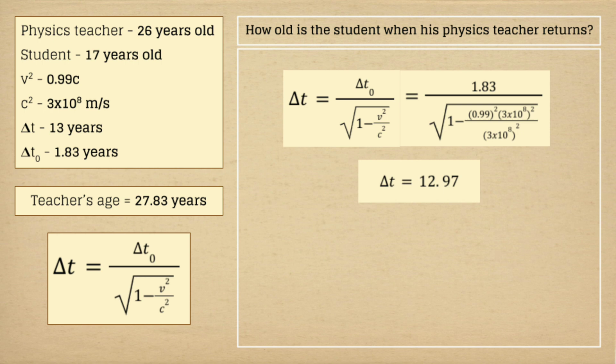To solve for the student's age after his physics teacher's return, we just need to add this value of change in measured time to his age prior to the departure of his teacher. By doing that, we would find out that his age is now 29.97 years. Twelve years had passed for him on earth, while it was just a year for his teacher.